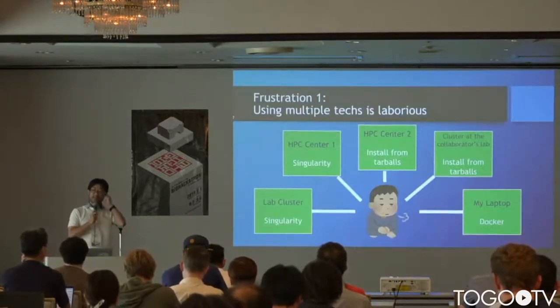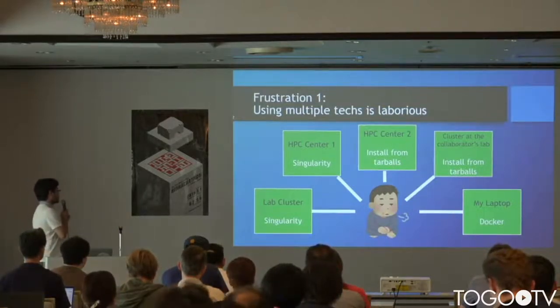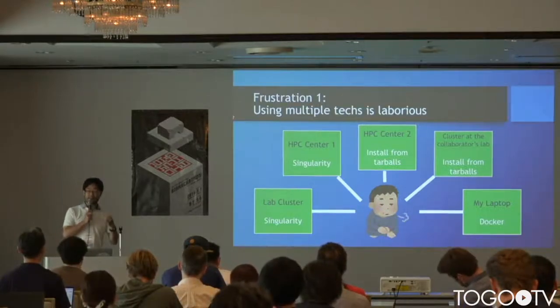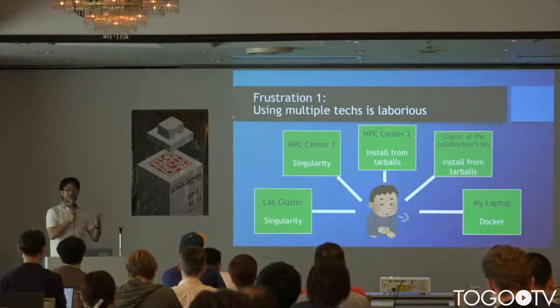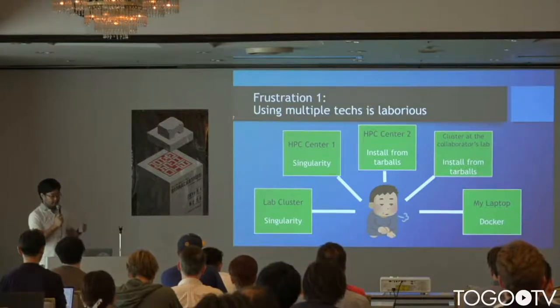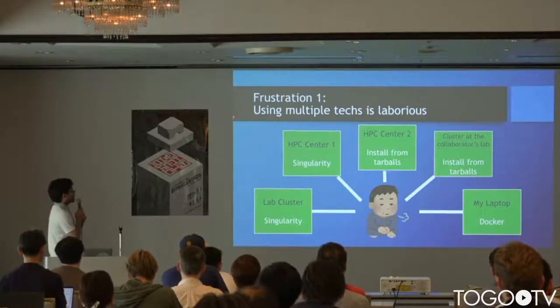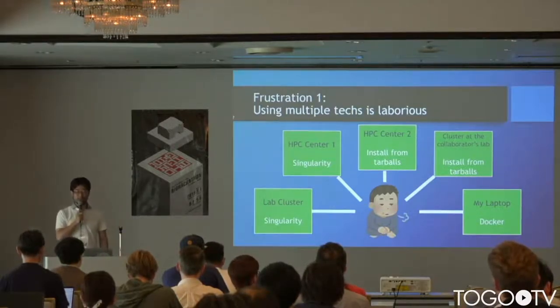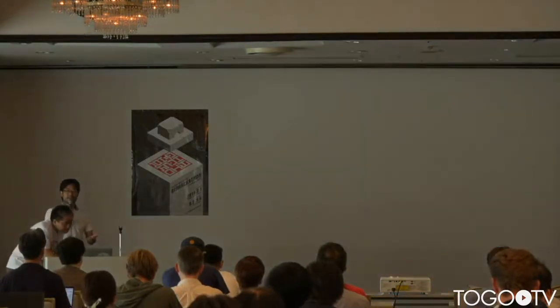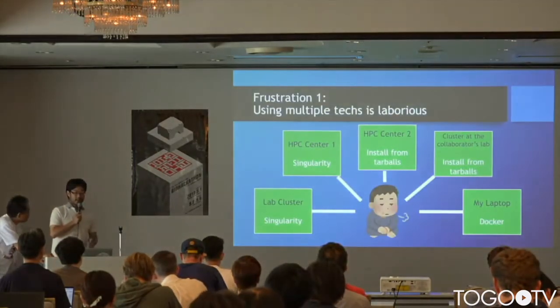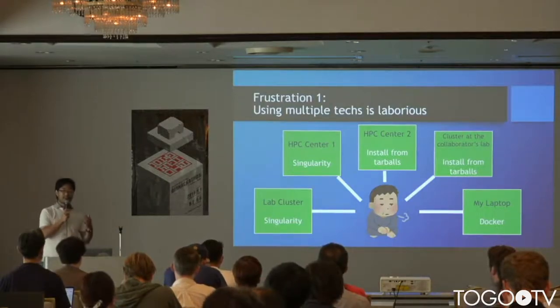Imagine you have five Linux clusters. You have a lab cluster where you can use Singularity 3.x because the system administrator installed it. Another supercomputing system has Singularity 2.x installed instead. A third supercomputing system has no container engines like Singularity or Docker at all, because system administrators refuse to install any of them — expensive supercomputers are usually purchased by public bidding, meaning extra installation costs require additional contract payments.